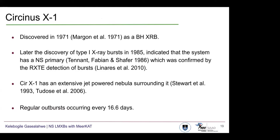For Circinus X1, this was initially thought to be a black hole X-ray binary because of X-ray spectral and timing similarities to Cygnus X1, which is in fact a high mass X-ray binary. However, with the discovery of type 1 X-ray bursts indicating the primary component is a neutron star, this was confirmed decades later with detection by RXTE. Circinus X1 also has an extensive nebula surrounding it, powered by the continuing jet action of the system, and is observed to go into regular outbursts occurring every about 16 and a half days.